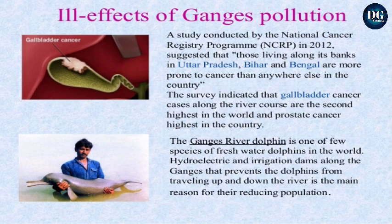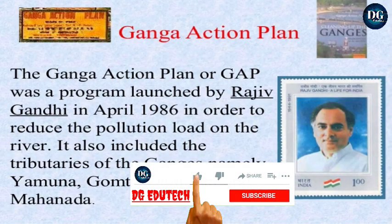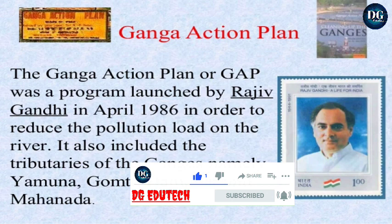The Ganga river dolphin is one of the few species of freshwater dolphins. Hydroelectric and irrigation dams along the Ganga prevent the dolphins from moving up and down the river, which is the main reason for the declining population of dolphin fish. The Ganga Action Plan program was launched by Rajiv Gandhi in 1986 in order to reduce the pollution load on the river.